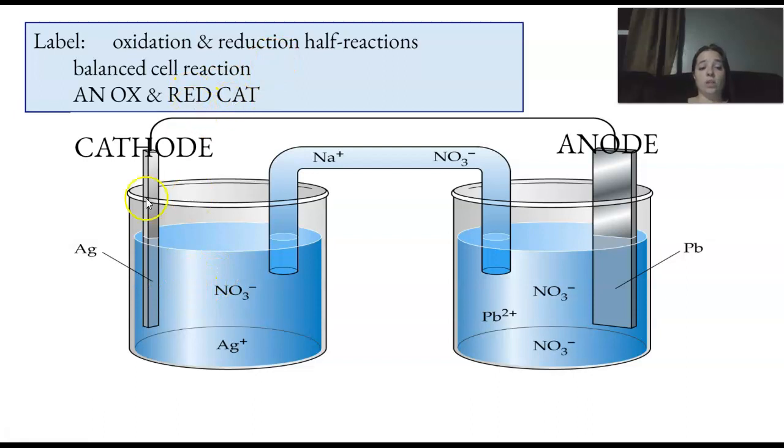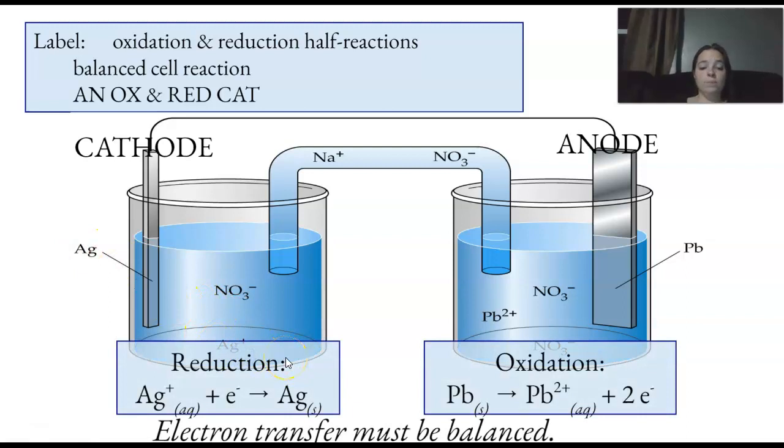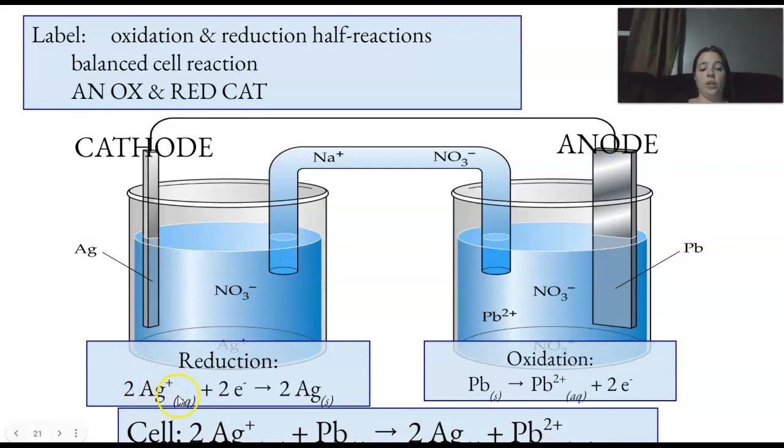It goes from Ag plus to Ag. If there's two here and one there, I just got to multiply everything on that side by two to balance. Which gives me two Ag plus two E, two Ag. Get rid of my electrons because they're spectating. Take what's on this side. Add them together. Take what's on this side. Add them together.